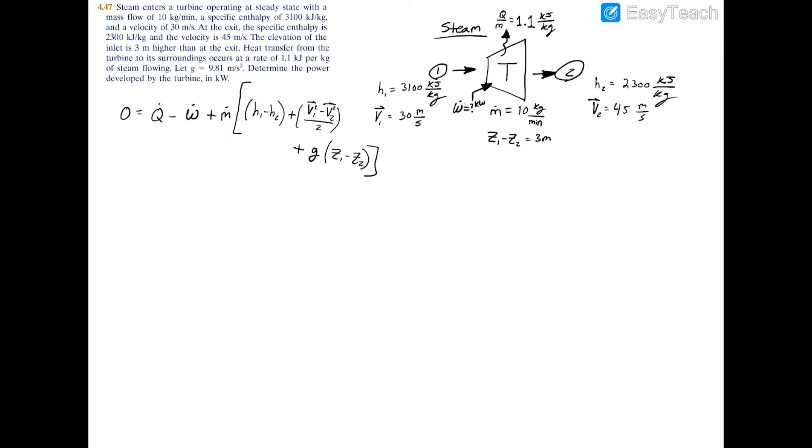Now if we rearrange and solve for the power, we're gonna have that W dot equals the heat transfer Q dot plus the mass flow rate times the change in enthalpy h1 minus h2, plus the change in kinetic energy v1 squared minus v2 squared divided by two, plus the potential energy mgz, z1 minus z2. Close the brackets around all these different kinds of energies.